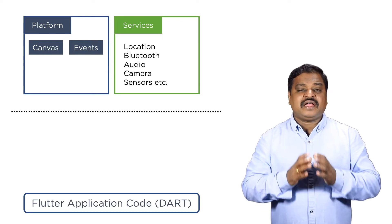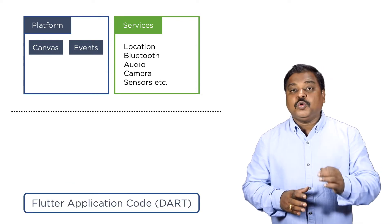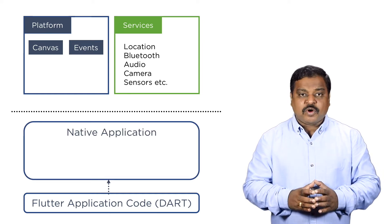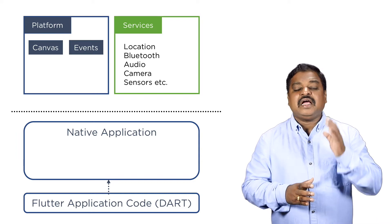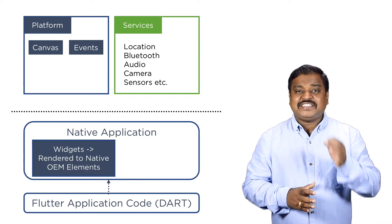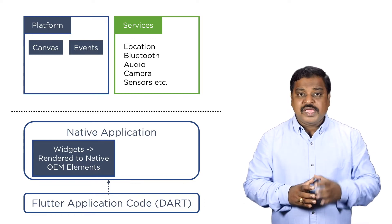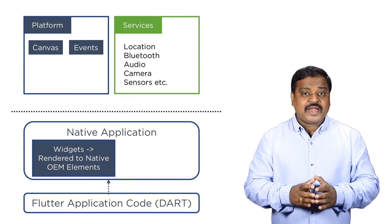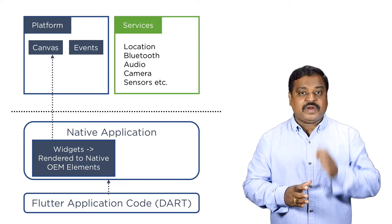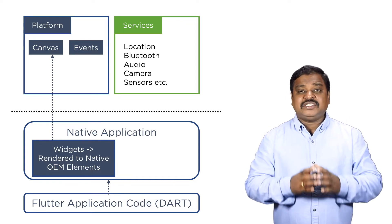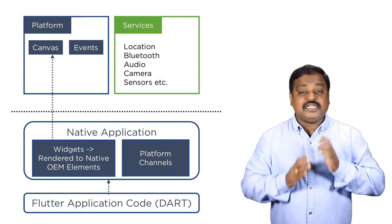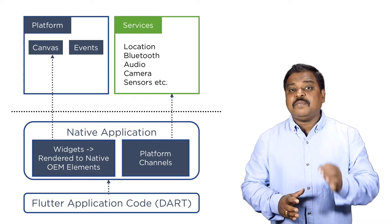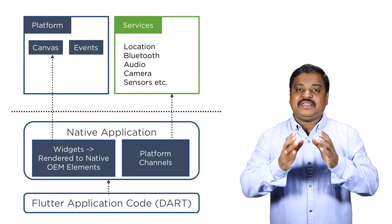Now let us understand how Flutter works. Let us assume that we have created a Flutter application using the Dart language and generated a native app. The important point to understand here is that widgets get rendered to the native OEM elements within the native app itself, so the UI can be directly displayed on the canvas of the platform. The app also consists of platform channels through which platform-specific services and features — including the GPU — can be used directly by the app.